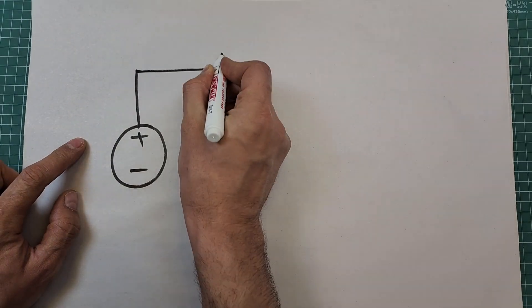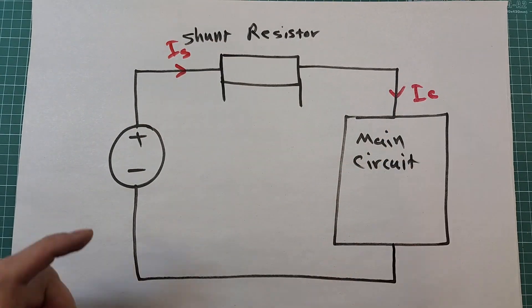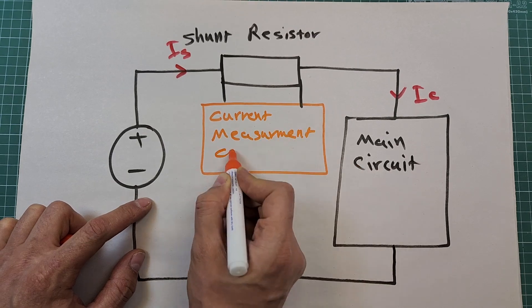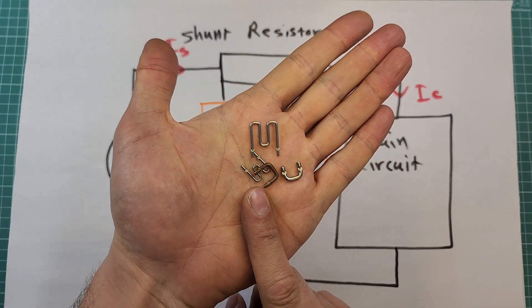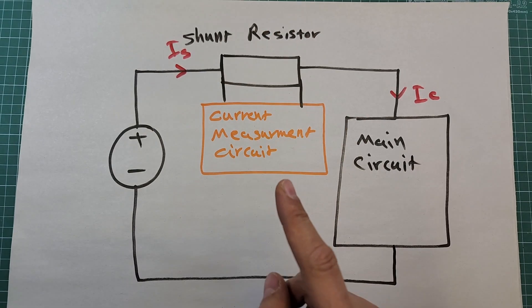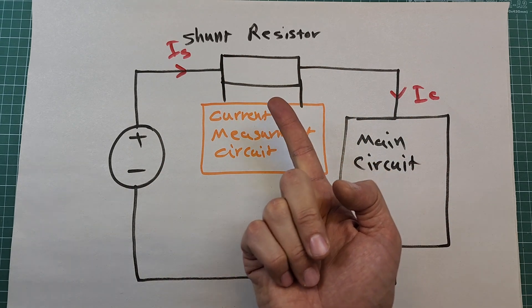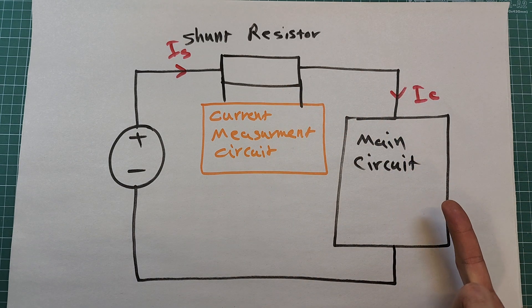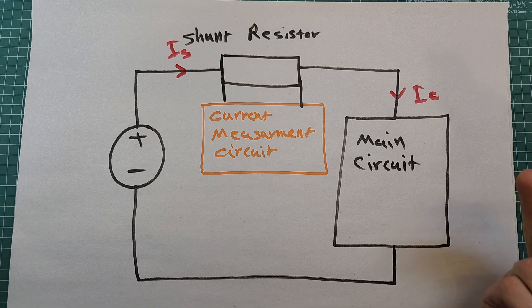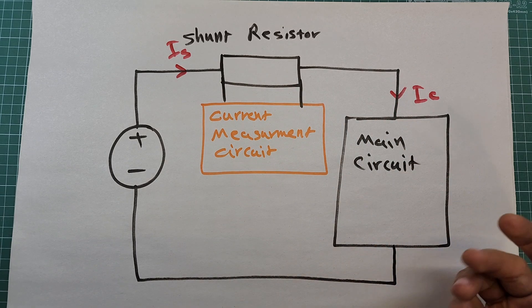I'll explain both methods in full detail so that you understand what advantages and disadvantages each has, and where you should use which method. I'll start with the shunt resistor. What you see here are examples of shunt resistors that are used to measure current. To measure current using a shunt resistor, we must place the shunt resistor in the current path in series. Since the shunt resistor is placed in series with the main circuit, the current passing through it is exactly equal to the current passing through the main circuit, so if we measure the current through the shunt resistor we are actually measuring the current through the circuit.